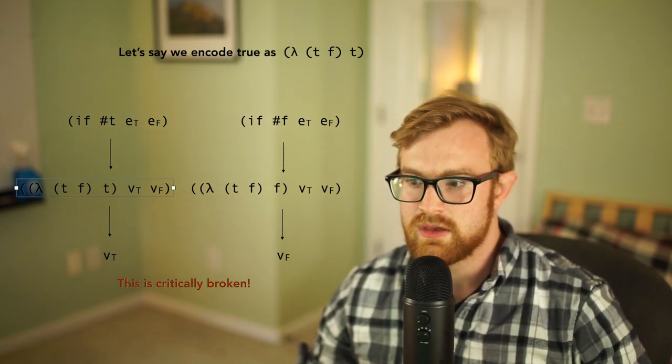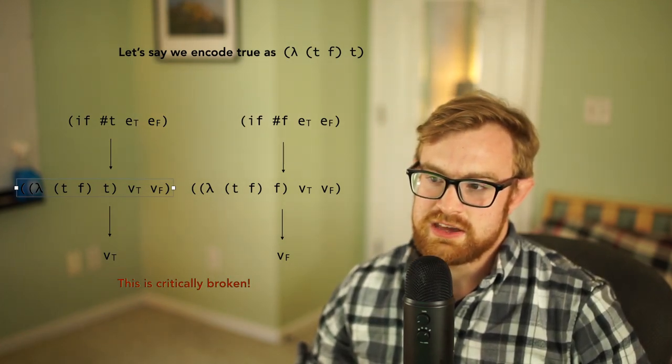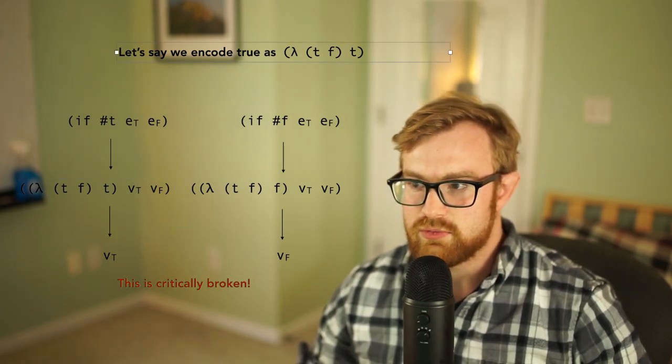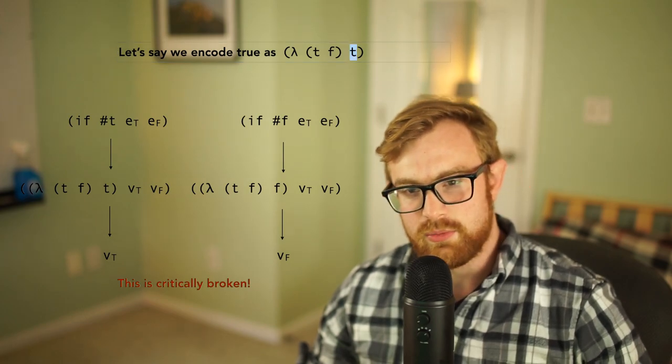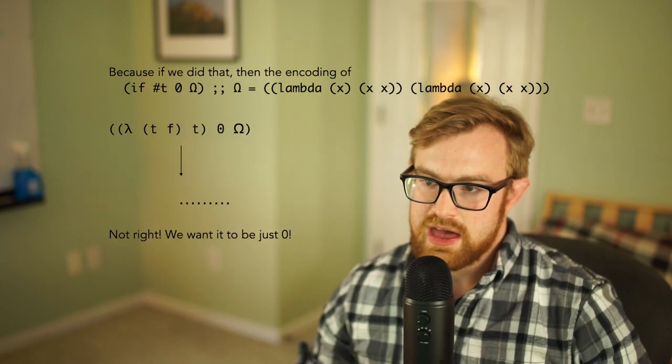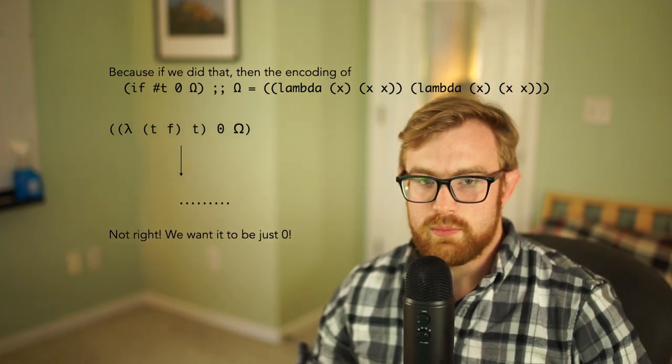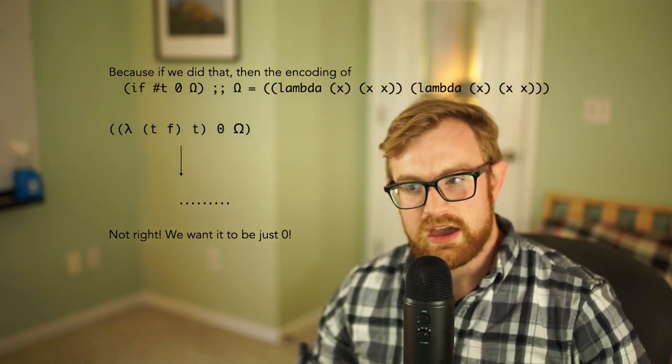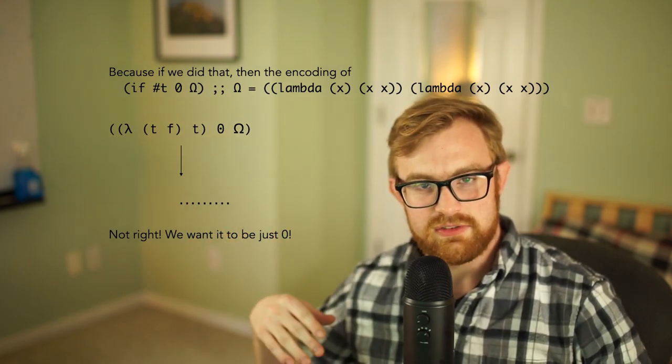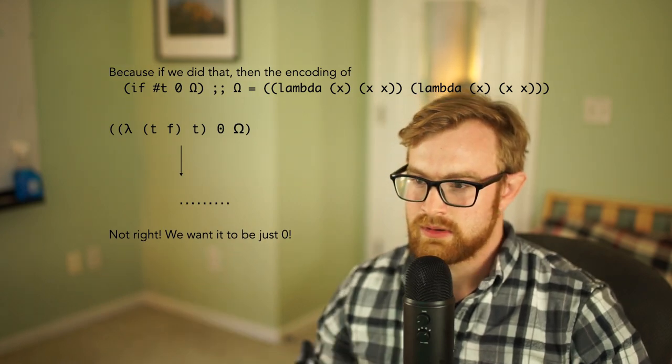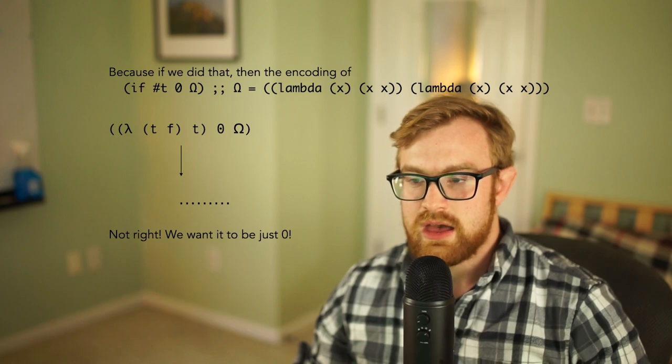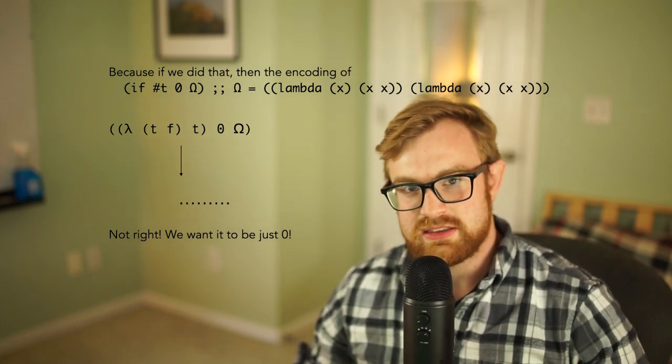All right, but unfortunately this translation is critically broken. So this translation for true and false, if we even change this to f here for false, it's almost correct but it's not quite correct. And here's why: if we have if true zero omega, in most programming languages we don't want to execute the false branch unless we actually have the guard turn out to be false.